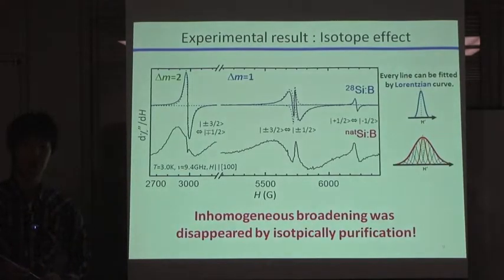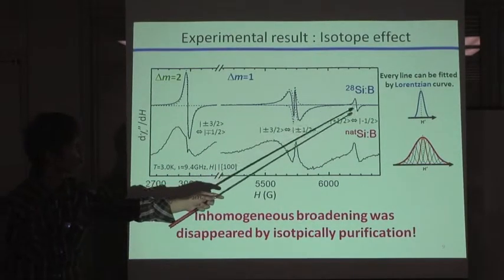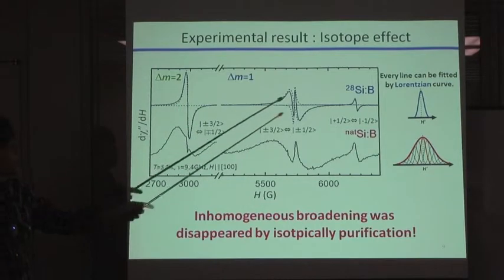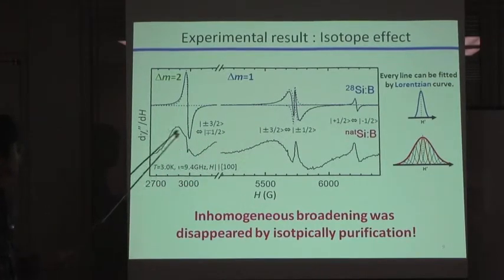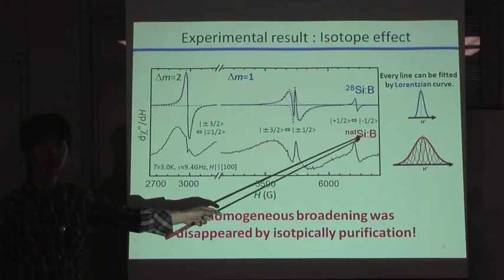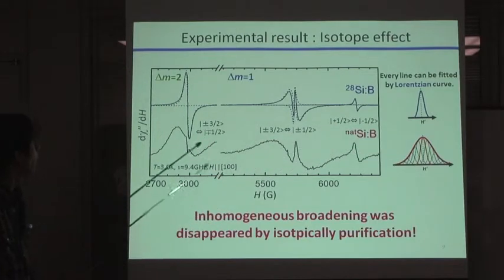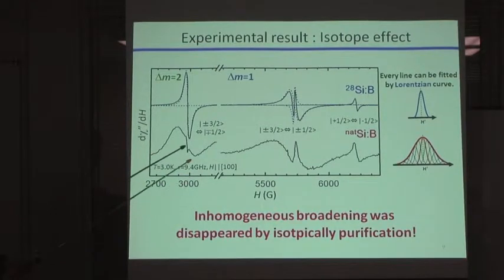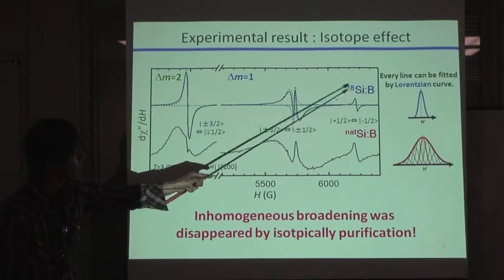This is the experimental result. In this figure, upper spectrum is measured by 28-silicon sample, and lower spectrum is measured by a natural silicon sample. And the blue dotted line is a numerical fitting line composed of pure Lorentzian curve. So, from this spectrum, you can see the clear reduction of line widths, like this.